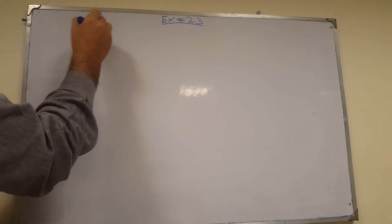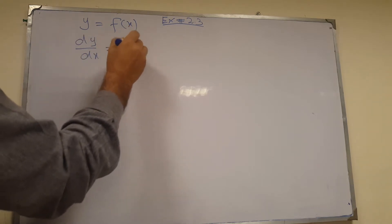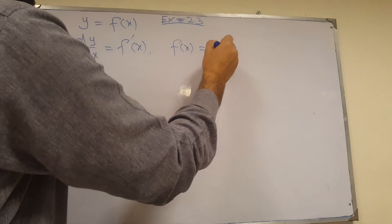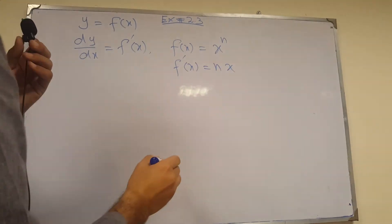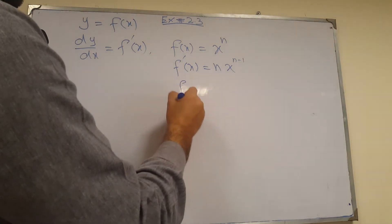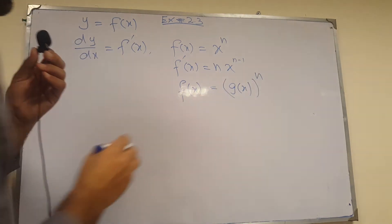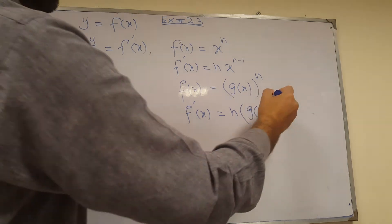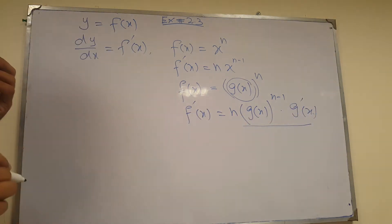One of the rules of derivatives is the power rule. If you are given y = f(x) in the form x^n, then dy/dx means differentiating with respect to x: you take the power to the front, multiply it to the function, and subtract one from the power. If the function is a composite form, you bring the power to the front, subtract one from the power, and also take the derivative of the inside function and multiply it.